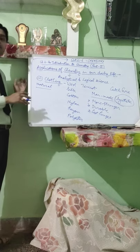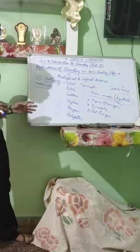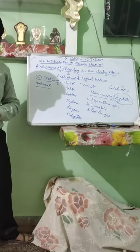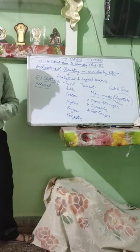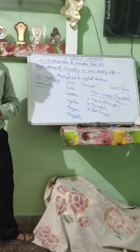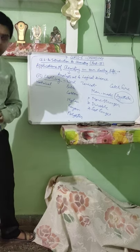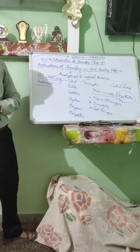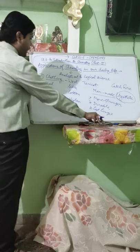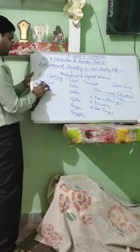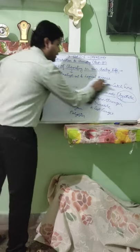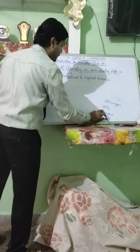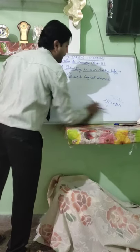However, natural fibres are good in many respects. The main drawback of synthetic fibres is that they can catch fire very easily, whereas natural fibres cannot catch fire so easily. Also, clothes made of natural fibres such as cotton and linen keep our body cool in summers compared to synthetic fibres. The seventh application of chemistry is in medicines.